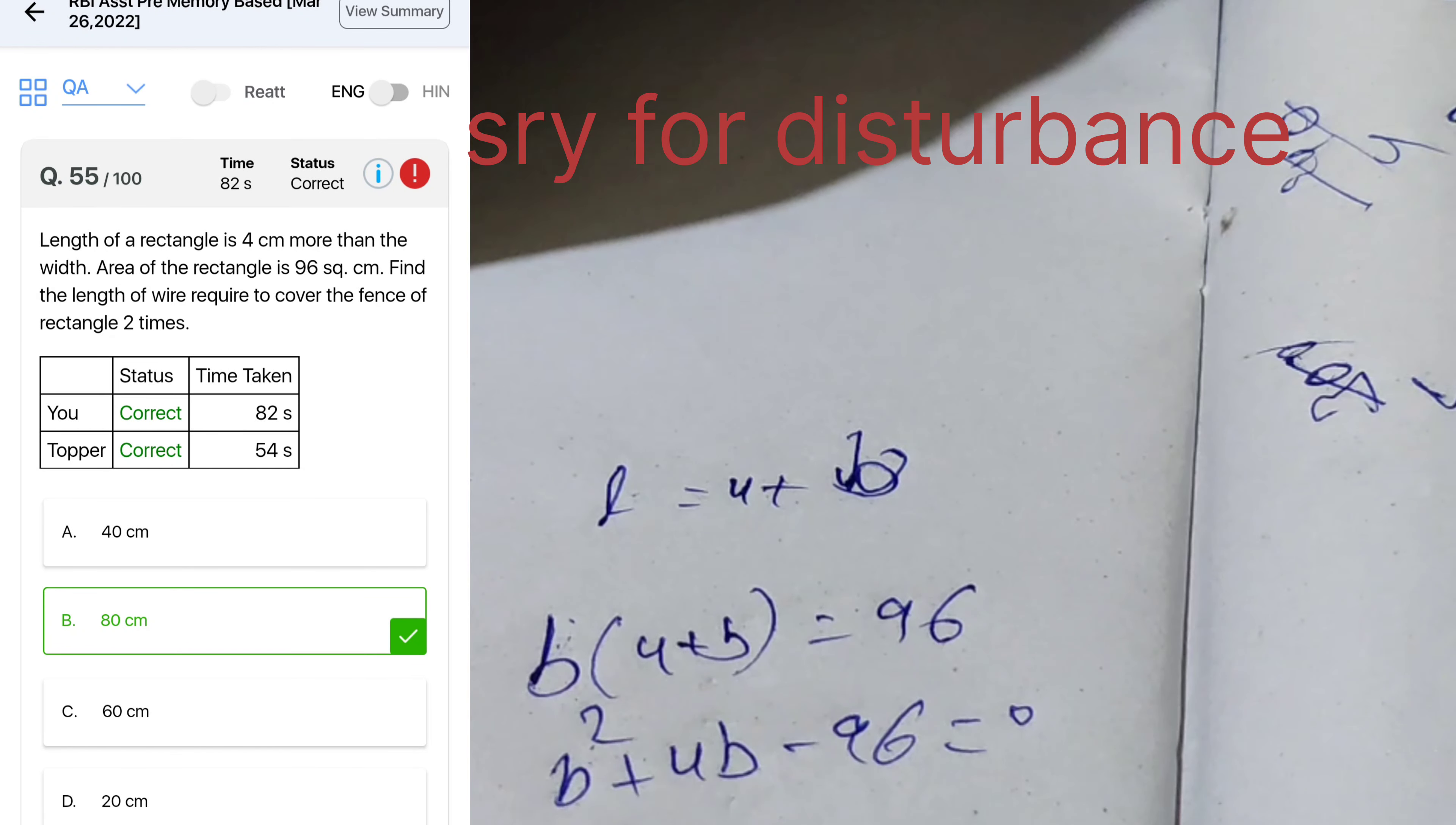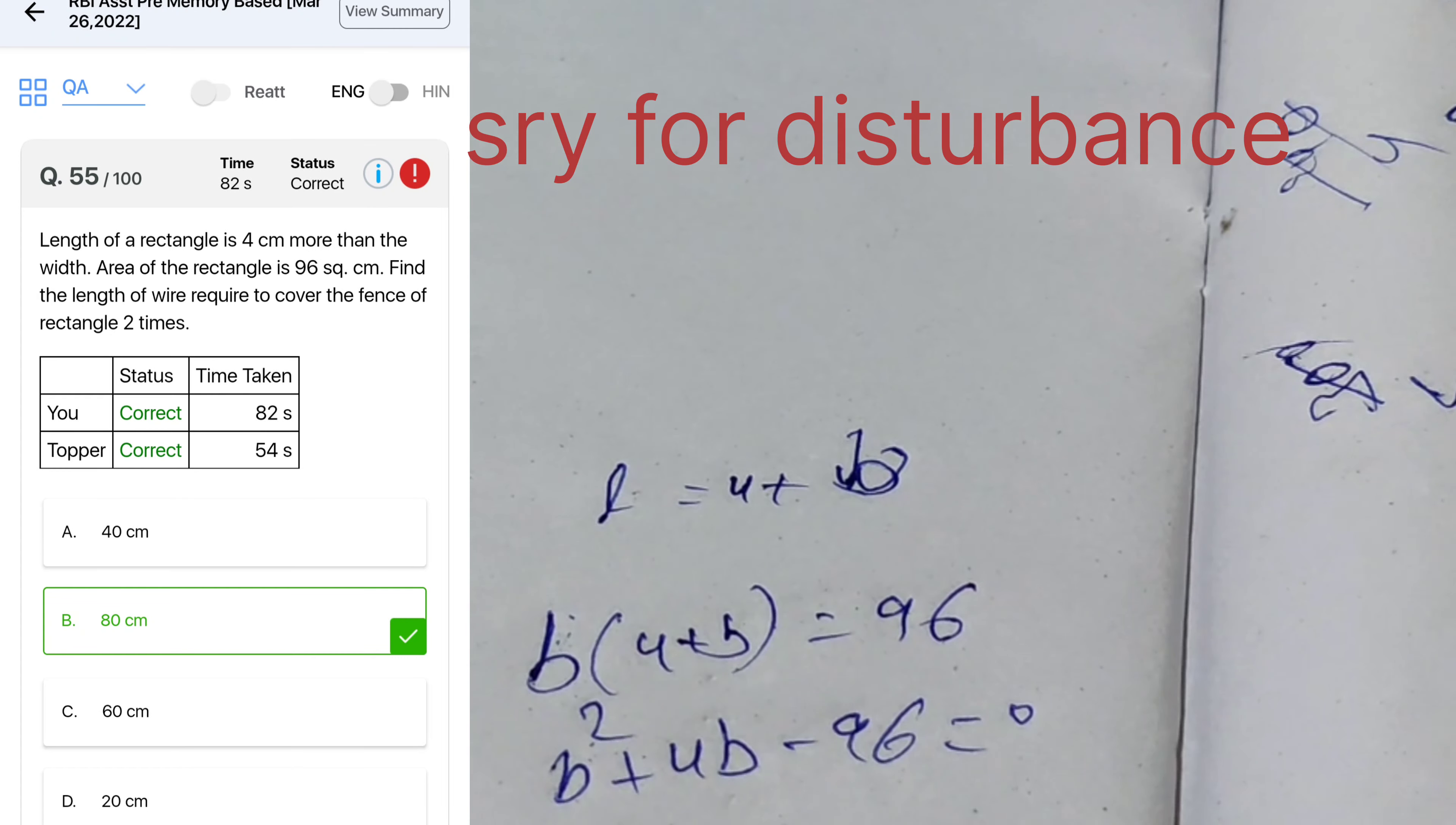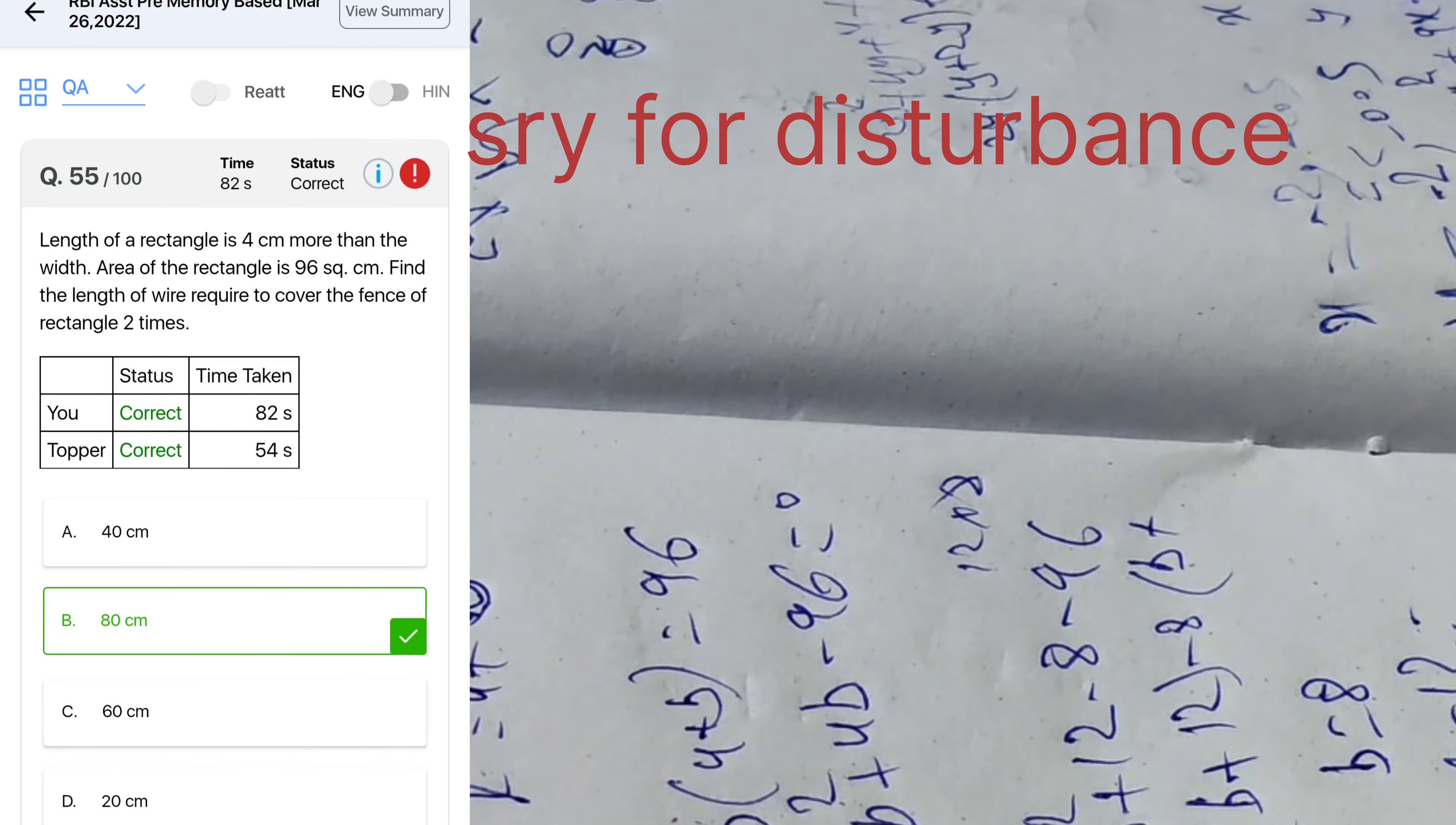Find the length of the wire required to cover the fence of rectangle 2 times. So this is now question, find the length of the wire required to cover the fence of rectangle 2 times, 2 into x. Perimeter 20, so I think it's 40. So 2 times means 40 into 2, it's 80.